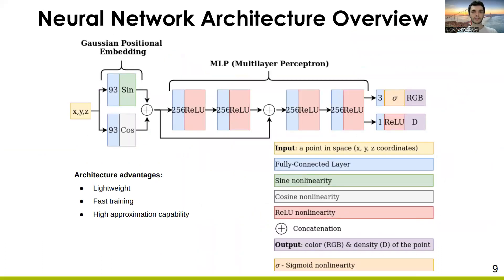Each neural network takes the point spatial coordinates x, y, z, applies Gaussian positional embedding, passes the result through a multilayer perceptron body, and returns the values of color and density at the point. The network is low-weight and fast to train because it is a small multilayer perceptron. At the same time, it has large approximation capability because it consists of fully connected layers.